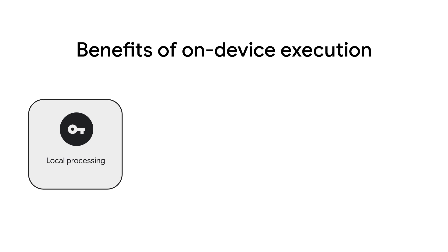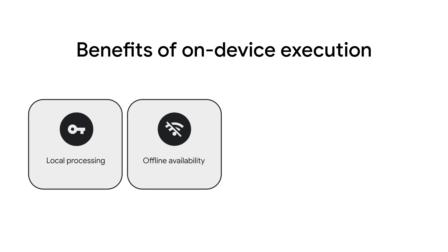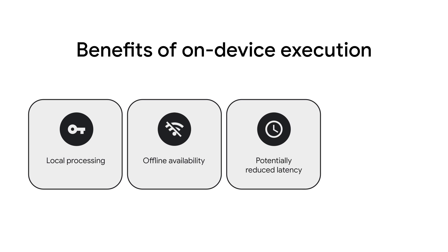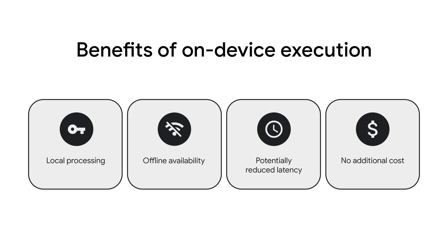On-device GenAI can process prompts directly on your smartphone, tablet, or computer without any server calls. This offers several key advantages: sensitive user data is processed locally on the device, the model offers full functionality even with poor internet connectivity, potentially reduced latency enabling real-time responsiveness, and there is no additional monetary cost for each inference because on-device GenAI runs on user hardware.